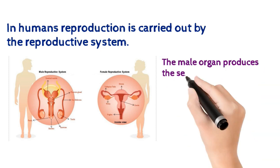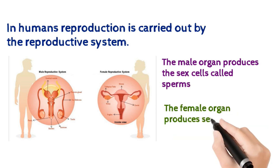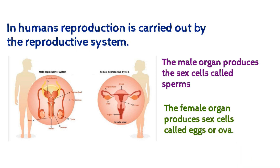So these organs differ in the different sexes. The male organs mainly have the function of producing sperm, while the female organ has the function of producing eggs, which you can also call ova.